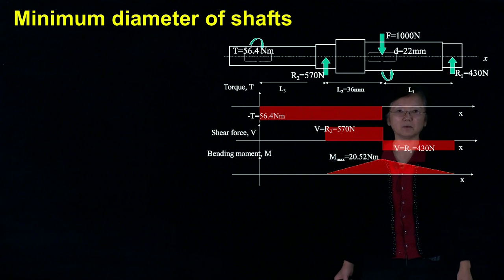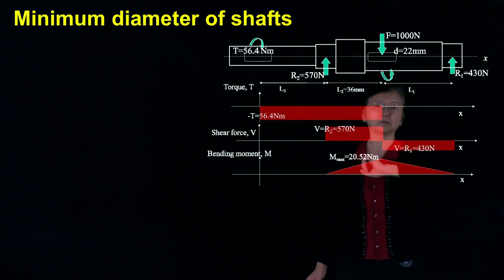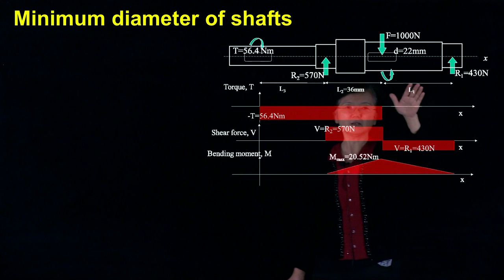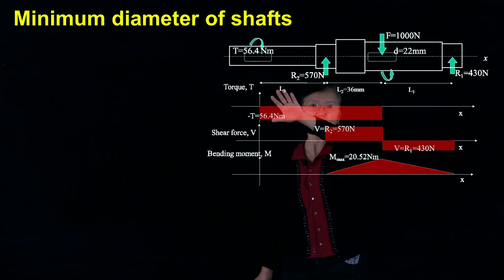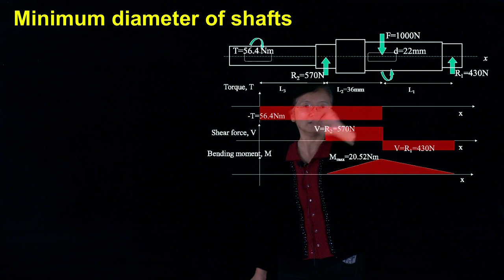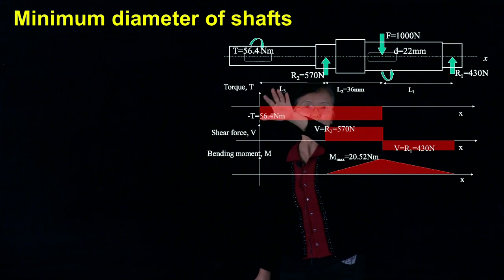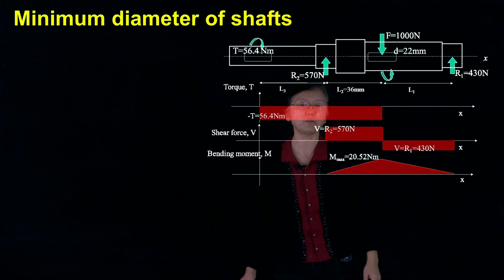Also think about on the shaft, we should also have the key and the keyways. To make the things simpler, I just switch the two keyways along the same line here. So this place obviously is for gears, and this place is likely for a coupling.